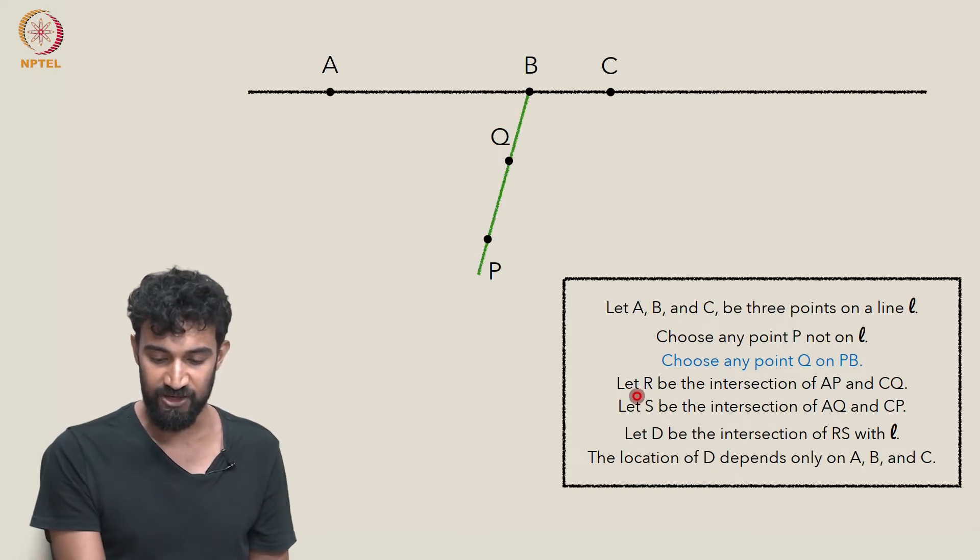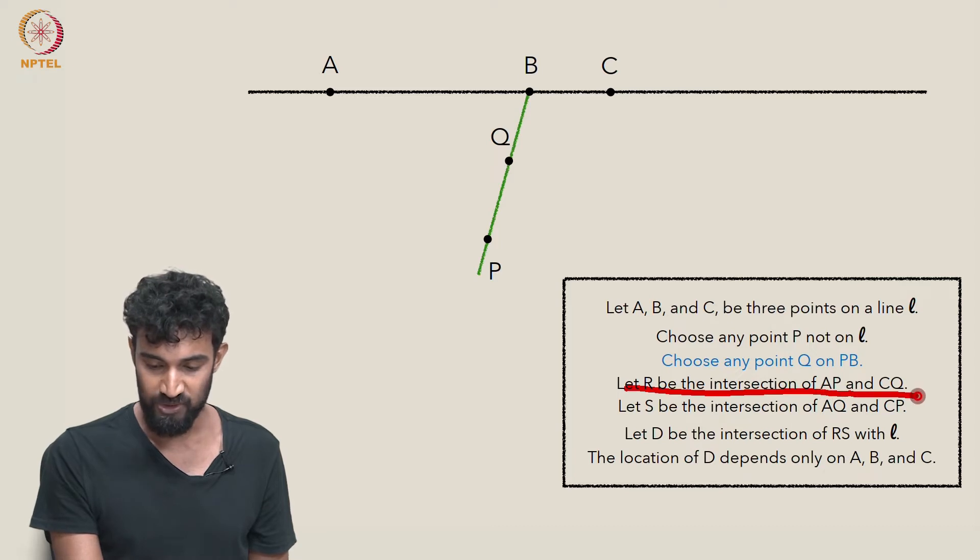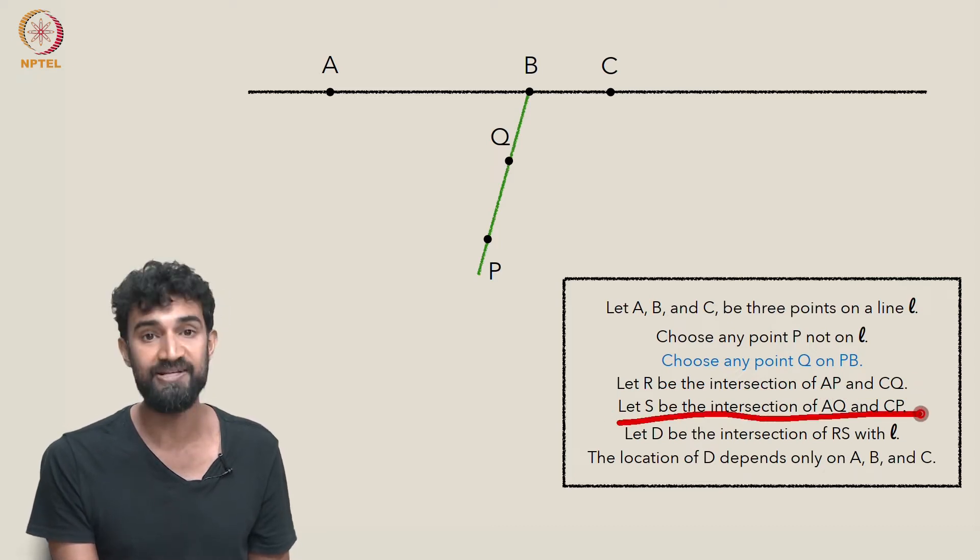Now let's let R be the intersection of AP and CQ. And let's let S be the intersection of AQ and CP.